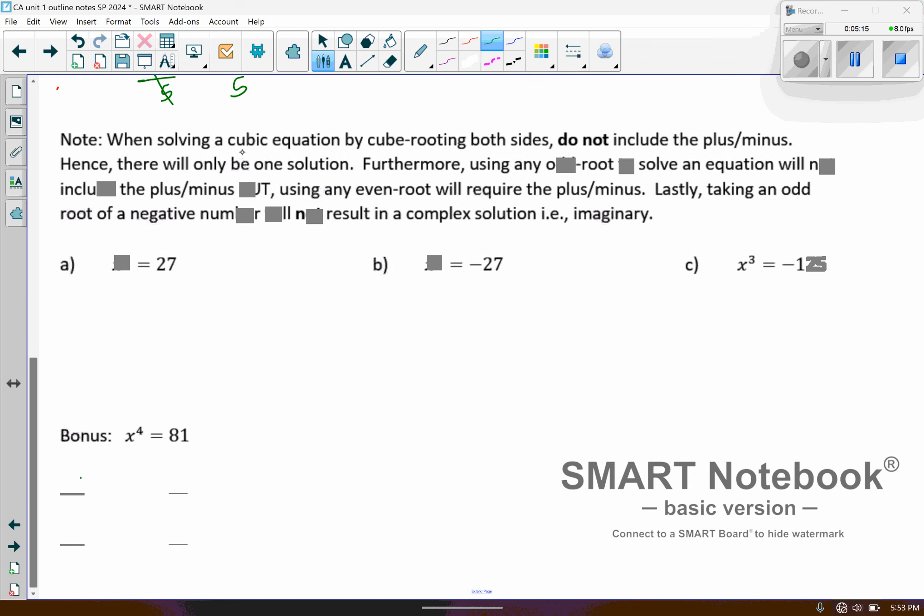So right here it says, note: when solving a cubic equation by cube rooting both sides, do not include the plus or minus. Hence, there will only be one solution. Furthermore, any odd root to solve an equation will not include the plus or minus. So even if you're doing a cube root or a fifth root, you don't do the plus or minus if it's odd. But using any even root will require the plus or minus. Lastly, taking an odd root of a negative number will not result in a complex solution. So whenever we take cube roots, we'll actually never get imaginary solutions.